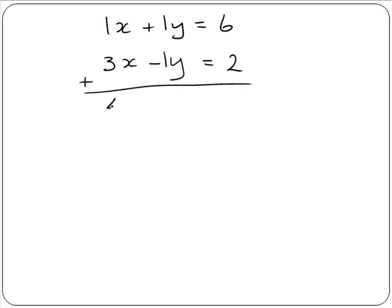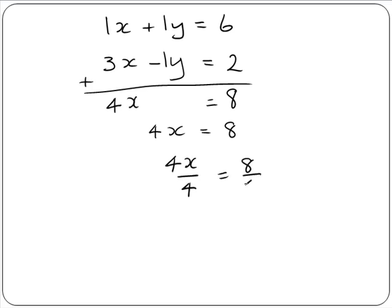1x and 3x will give us 4x. Plus 1y minus 1y will give us 0. And 6 plus 2 will give us 8. So now we have 4x equals 8. To get x by itself, we divide both sides by 4: 4x divided by 4 and 8 divided by 4. 4 into 8 goes twice, so x equals 2.